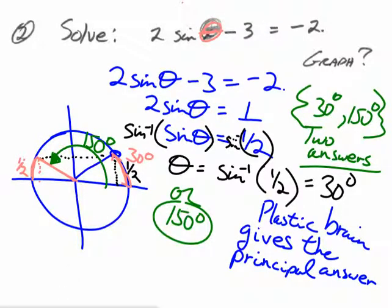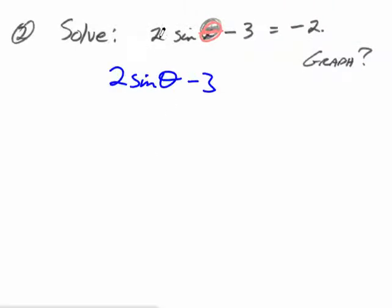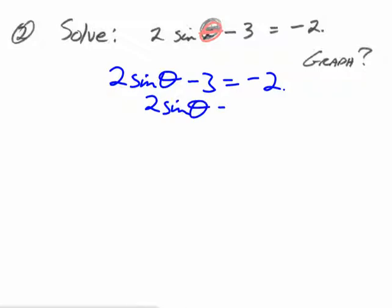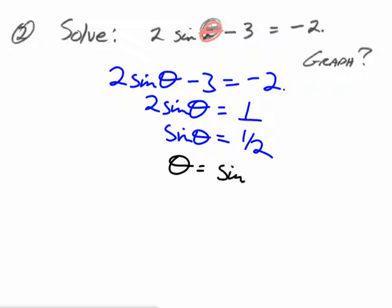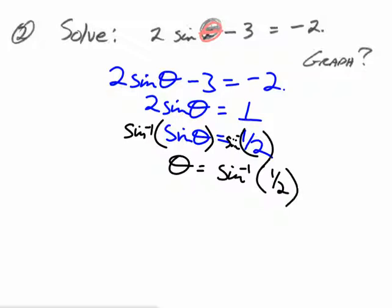Now let's do exactly the same problem but with one extra step. Instead of saying 2 times x minus 3 equals negative 2, we'll say 2 times the sine of an angle equals negative 2, and we'll even graph it. The exact same steps as before: add 3 to both sides to get plus 1, divide both sides by 2 to get one half. And everybody knows by now that the angle with a sine of one half — or if you're a carpenter, you'd know it's a 30-degree angle. We've known that from geometry for thousands of years. The inverse sine of one half is 30 degrees. If the opposite side is 1 and the hypotenuse is 2 in a right triangle, you have a perfect 30-degree corner.